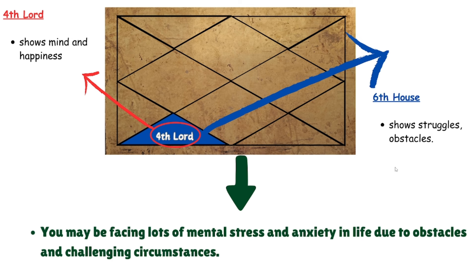The fourth lord shows the mind and happiness, while the sixth house shows struggles and obstacles. Due to the ongoing obstacles and challenges in everyday life, you will likely face mental stress and anxiety — worrying about what is going to happen and whether things will get better. This kind of mental unrest is also possible due to this placement.